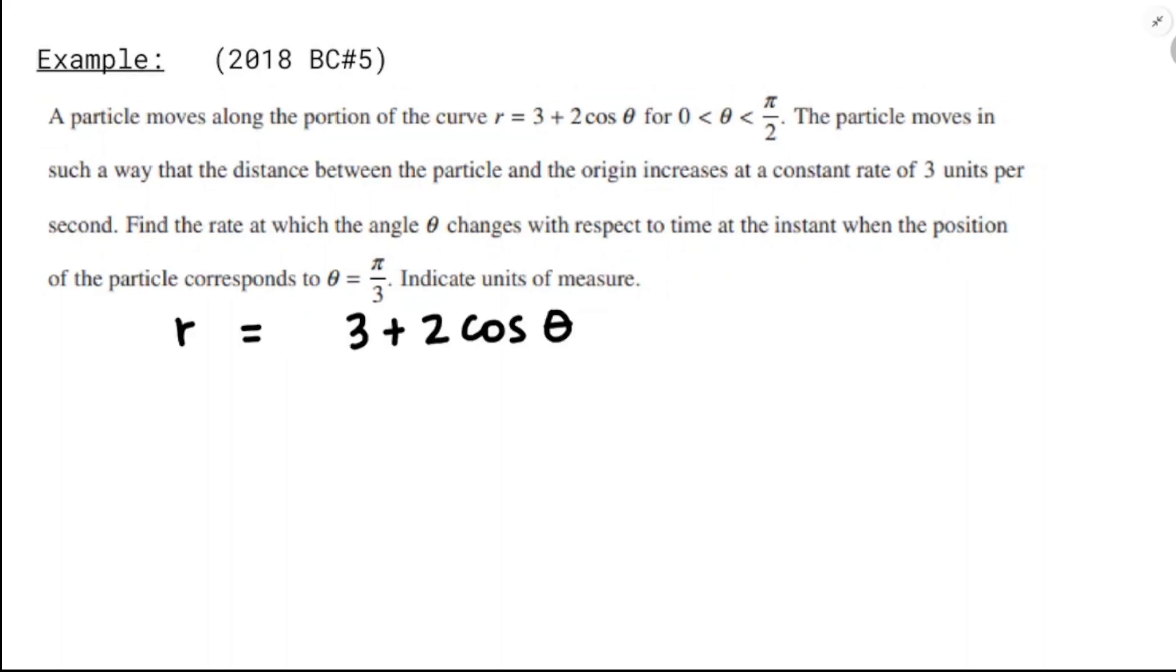So, just like the other ones, I'm going to start with my formula. I'm going to take the derivative with respect to time. I'm going to get dr/dt equals the derivative of 3, which is 0, minus 2 sin θ dθ/dt, and then I'm going to plug in what I know. θ is going to equal π/3, dr/dt is increasing at a constant rate of 3 units per second, so that's dr/dt equals 3, and dθ/dt is what I'm hoping to find eventually.